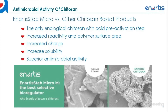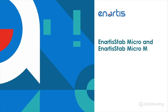Now we'll talk about our Ketozan range versus other Ketozan-based products. Ketozan itself is a versatile biological polymer that can be modified according to its intended application. Anardis Stab Micro has been specifically modified to increase antimicrobial efficiency. Compared to other available enological Ketozans, Anardis Stab Micro is the only enological Ketozan with a pre-acid activation step, which increases reactivity and polymer surface area, increases the charge, increases the solubility, and all of this lends to superior antimicrobial activity.